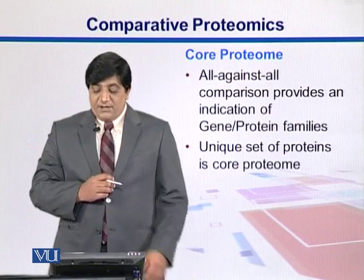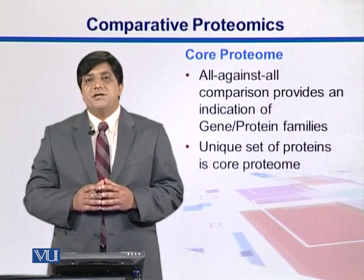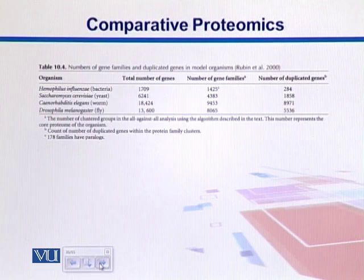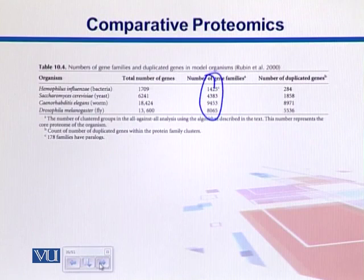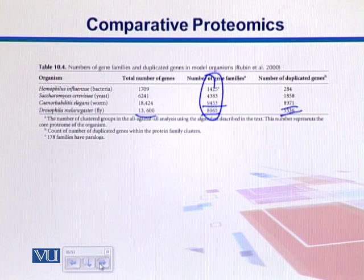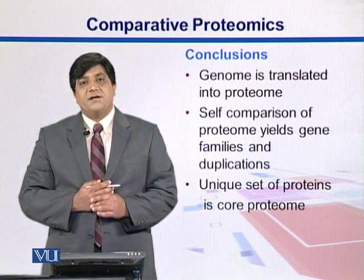The core proteome is identified when we do all-against-all comparisons — it tells us about duplicated proteins and the proteins uniquely present in an organism. In this diagram comparing core proteome with total gene count: bacteria have around 1,700 genes with 1,400 in gene families representing the core proteome; worm has about 18,000 genes with almost half in gene families and half duplicated; Drosophila has 13,000 genes with 8,000 gene families and 5,000 duplicated genes. In summary, the genome is translated into the proteome, self-comparison reveals genome duplications, and the unique set of proteins in an organism is called its core proteome.